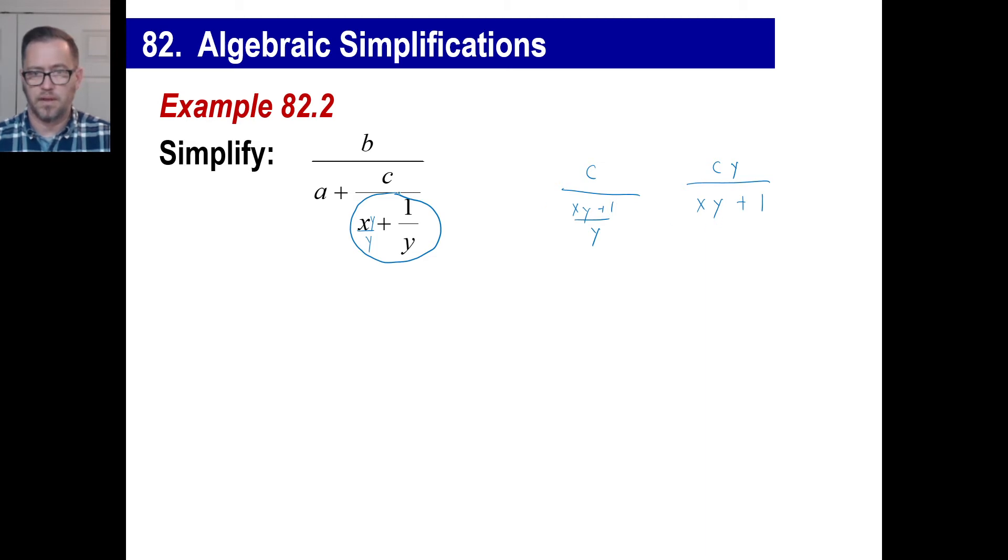Okay. And that is going to be right here. I will go ahead and rewrite the new fraction now. So we have b over A plus. And that's going to be cy over xy plus 1. And of course, we're going to have xy plus 1 as our common denominator. So let's go ahead and put this over here. And we'll multiply A times xy plus 1 on this fraction here.